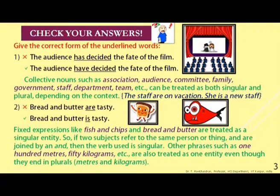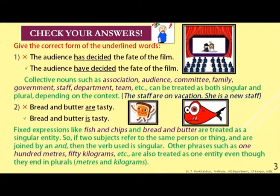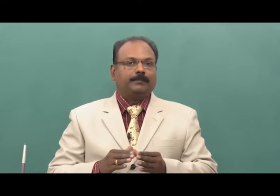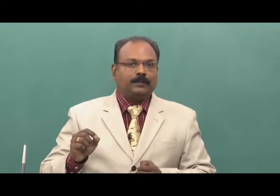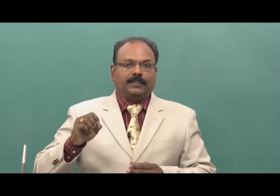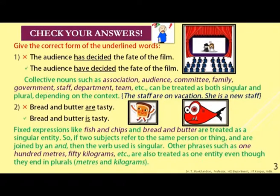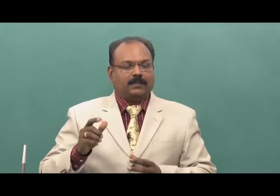Collective nouns such as association, audience, committee, family, government, staff, department, and team can be treated as both singular and plural depending on the context. For example, 'The staff are on vacation' refers to all staff members, while 'She is a new staff' refers to one individual. Note that 'staffs' is wrong usage — staff is always used for both singular and plural form.